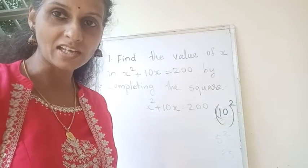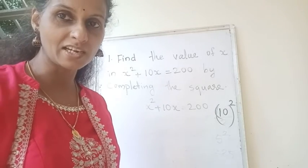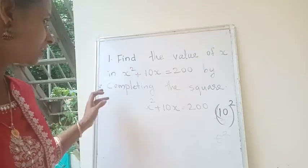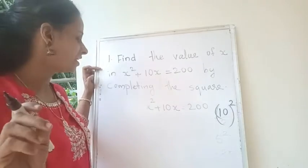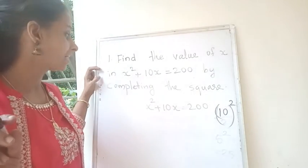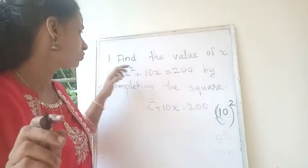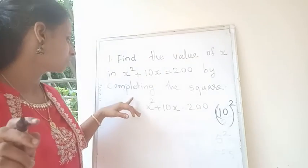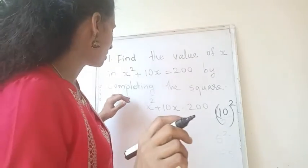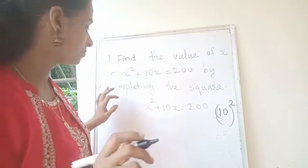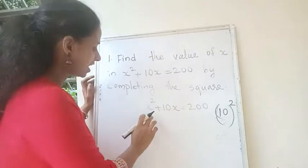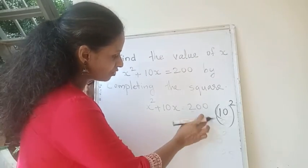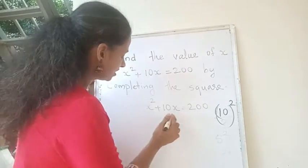Second degree equation — this is a very important question to discuss. Find the value of x in x squared plus 10x equal to 200 by completing the square. We have to write the equation like this: x squared plus 10x equal to 200. This is our equation.